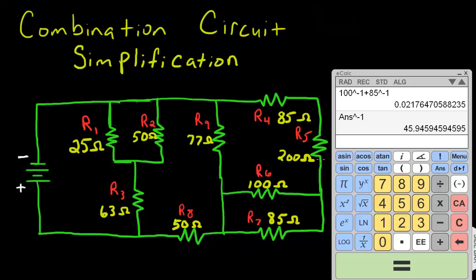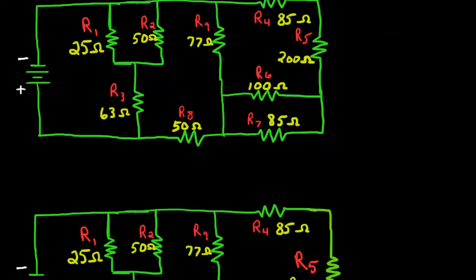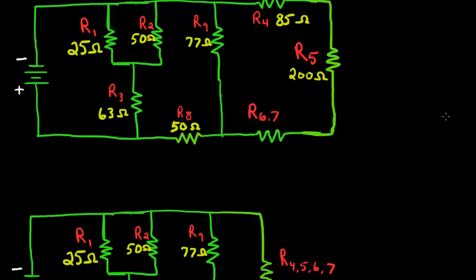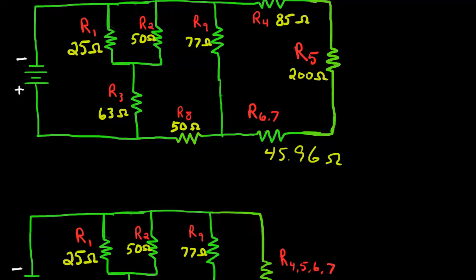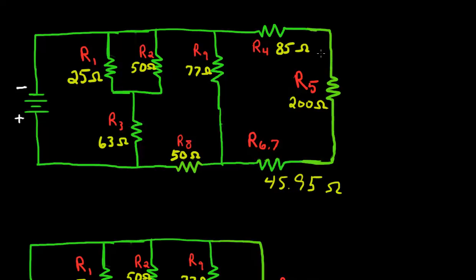So what we'll do is we'll redraw this branch of the circuit of R4, R5, and R67 as our very next step. We'll go ahead and put that in here for R67 is 45.95 ohms. And what do we have now in this branch of the circuit? We have three resistors in series with one another.